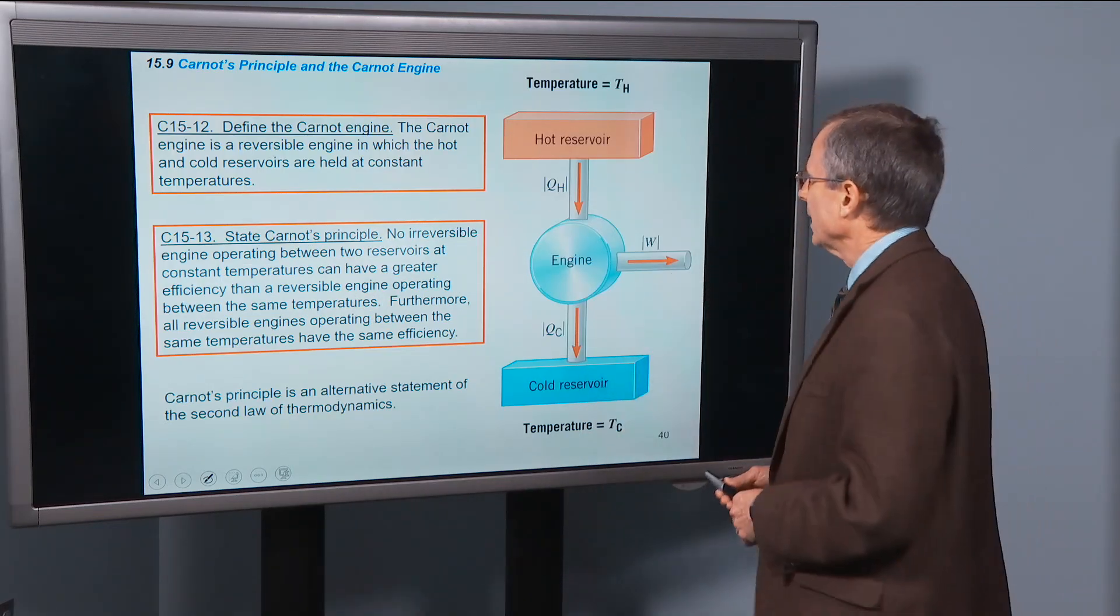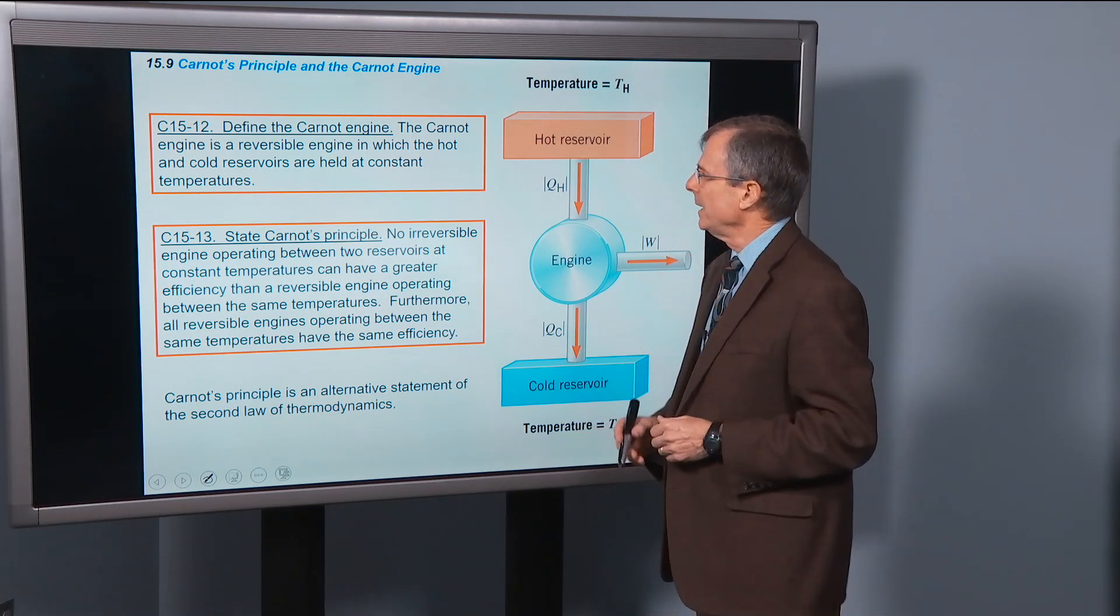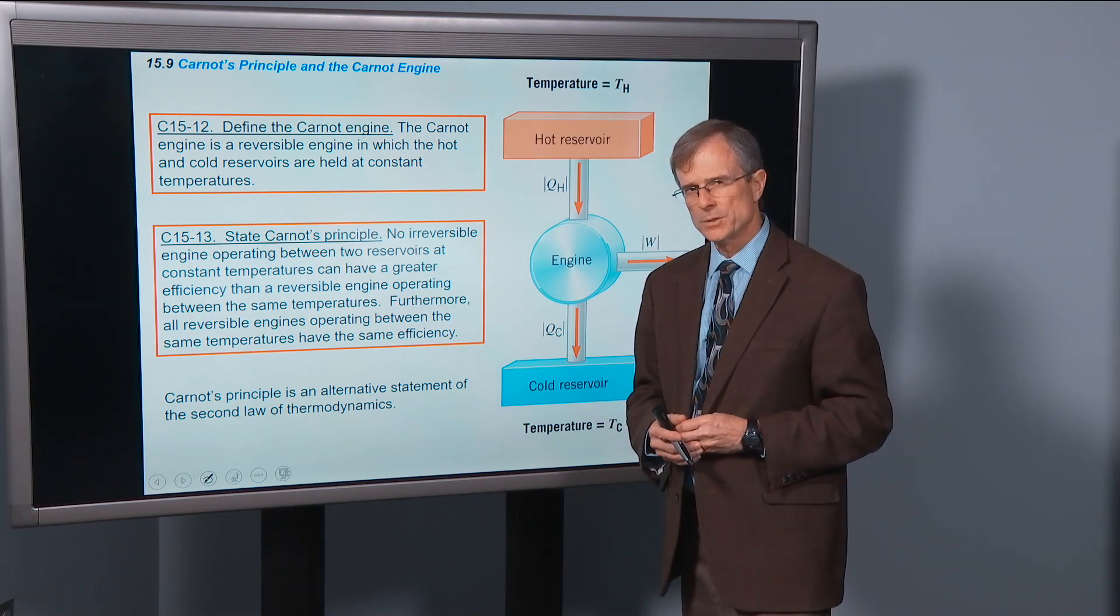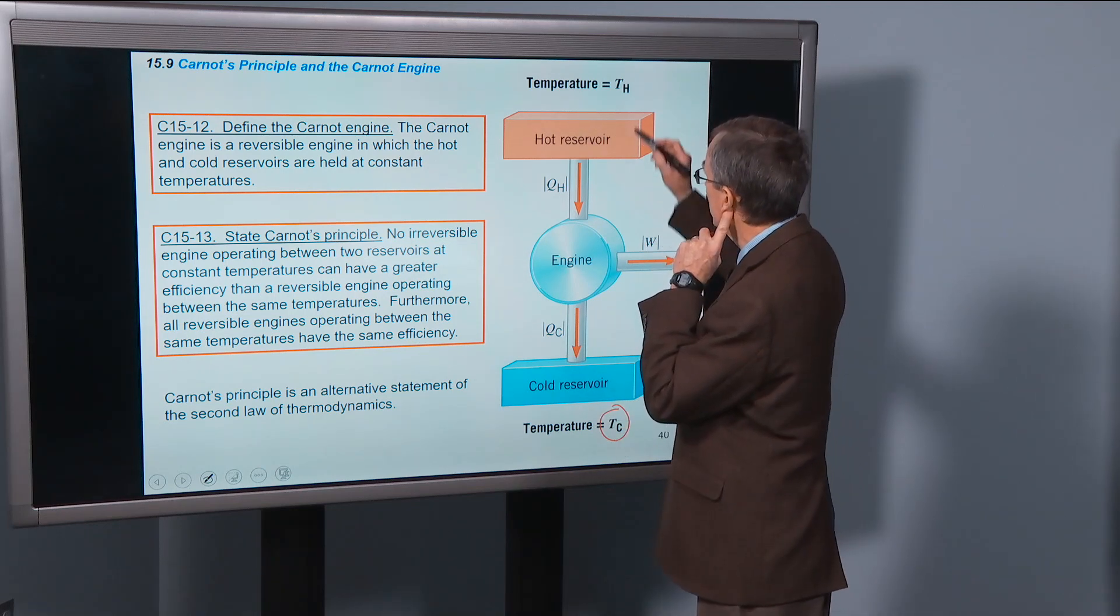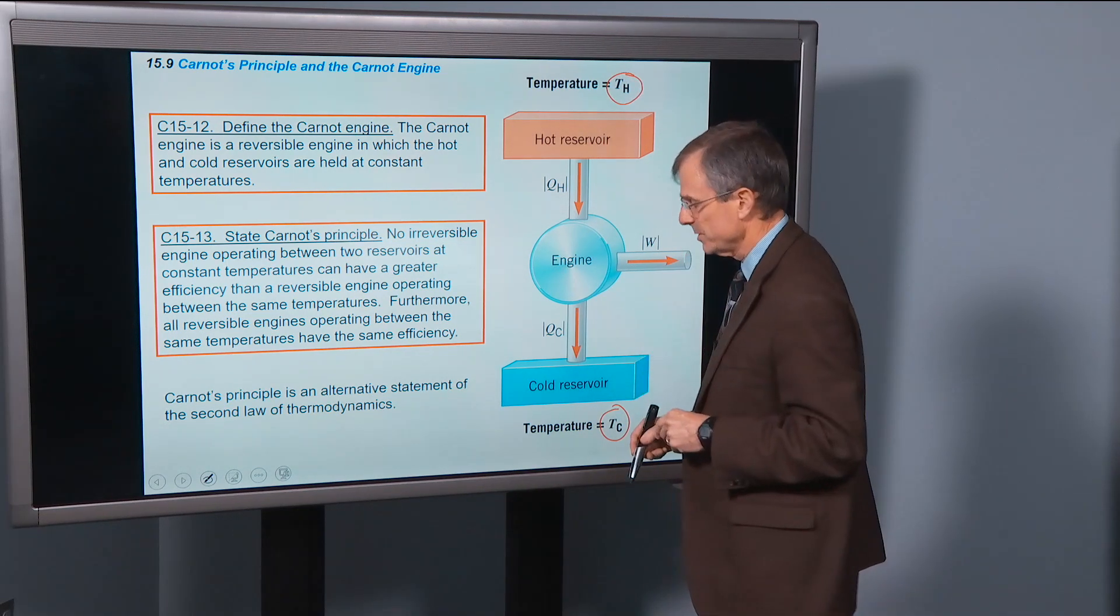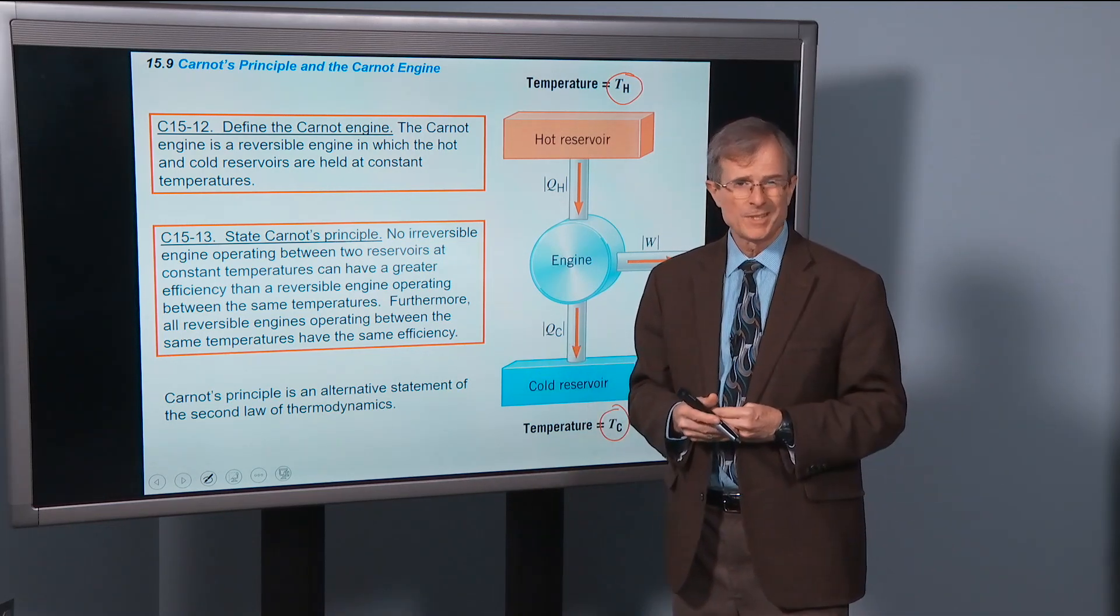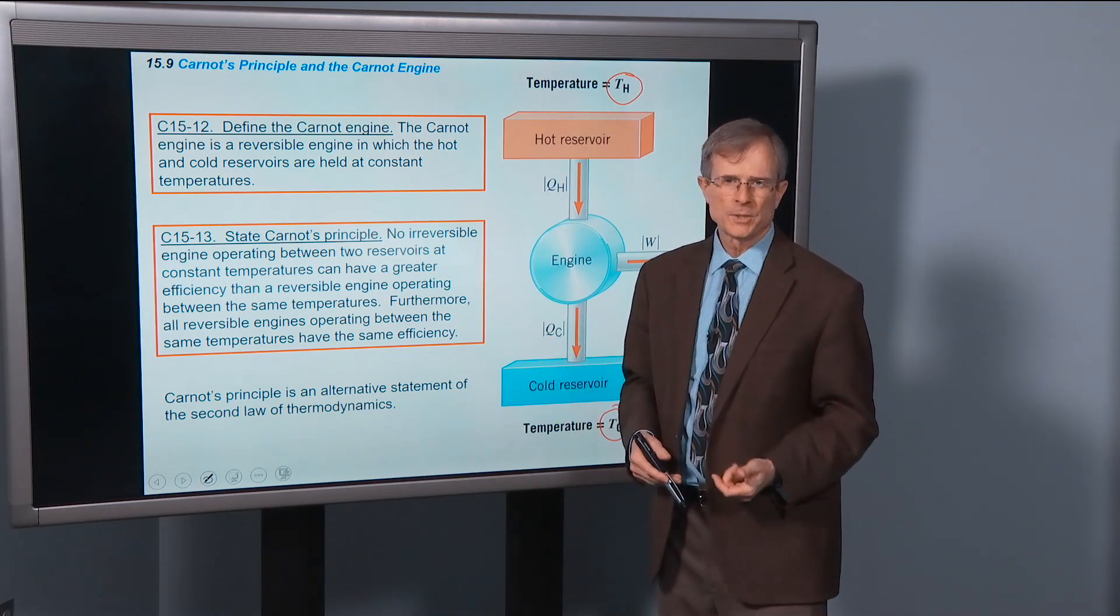So what's the definition of the Carnot engine? The Carnot engine is a reversible engine in which the hot and cold reservoirs are held at constant temperatures. Nowhere so far have we talked about the temperatures of the hot and cold reservoirs, or whether they need to be constant or not. In general, a heat engine doesn't have constant temperature reservoirs, but in a Carnot engine, it does.